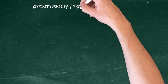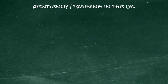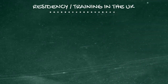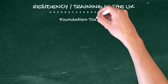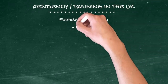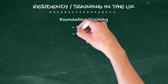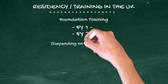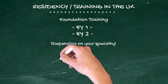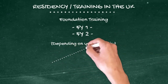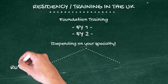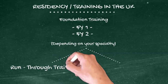To begin with, we will start with residency or training in the UK for UK graduates, then understanding the whole pathway will move on to international medical graduates. As you can see, the whole thing starts with foundation training for UK graduates, which comprises two years, and then depending on the specialty they want to pursue, there are two types of training.